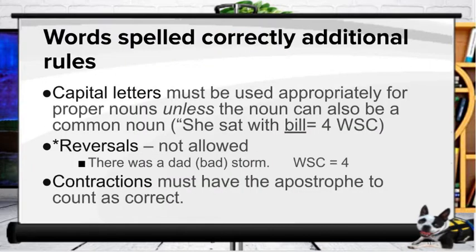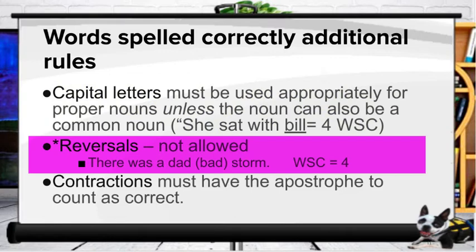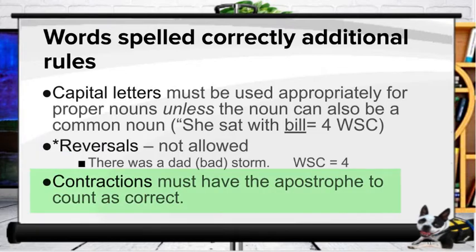There are some additional rules for words spelled correctly. Capital letters must be used appropriately for a proper noun, unless the noun can also be a common noun. For instance, 'She sat with Bill' — we count four words spelled correctly because Bill, though it should be capitalized here, can also be a common noun. Reversals are not allowed; for instance, writing 'dad storm' instead of 'bad storm' (reversing B and D) does not count. Contractions must have the apostrophe to be counted as correctly spelled.